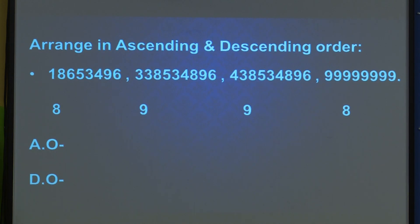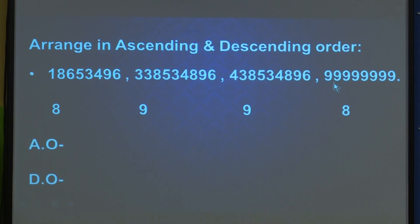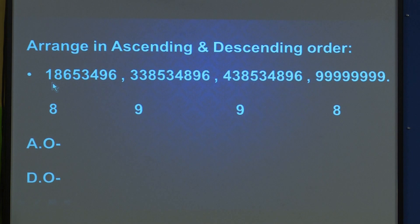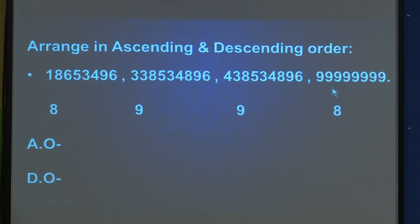For ascending order — small to big — first we write the smallest number. We have two 8-digit numbers, so we find which is smaller. Looking at the first two digits: one has 18 and the other has 99. So 18 is smaller, meaning the number starting with 18653496 is written first. Then the second 8-digit number 99999998 is written next.